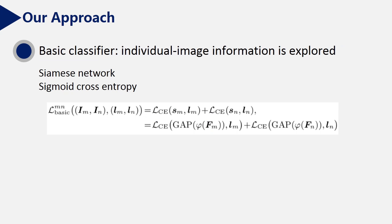Our basic classifier is built in a standard way. We adapt the Siamese network and use sigmoid cross-entropy loss. The loss for basic classifier is computed for both image im and image in. For mining the cross-image relation, we propose co-attention and contrastive co-attention.